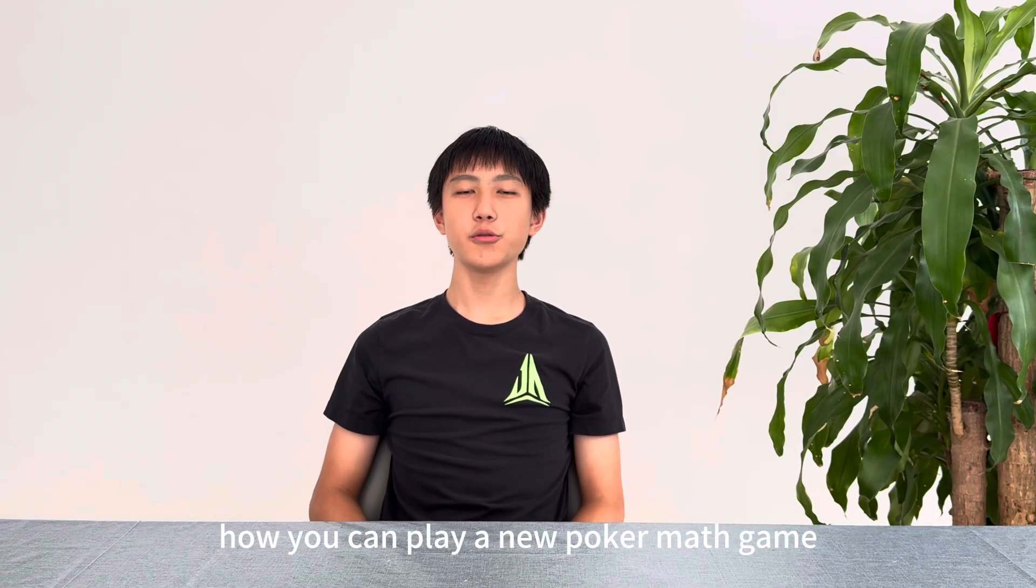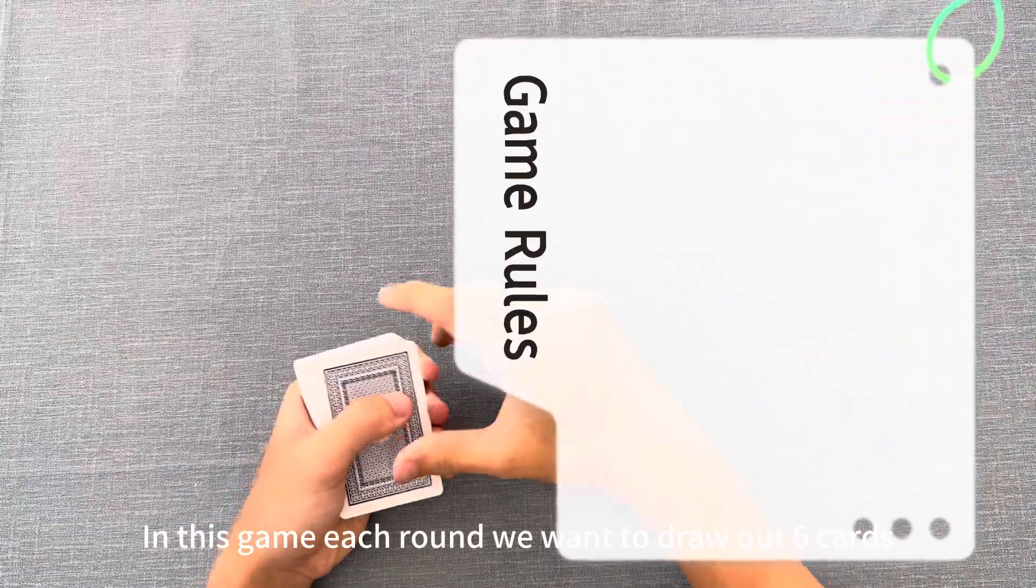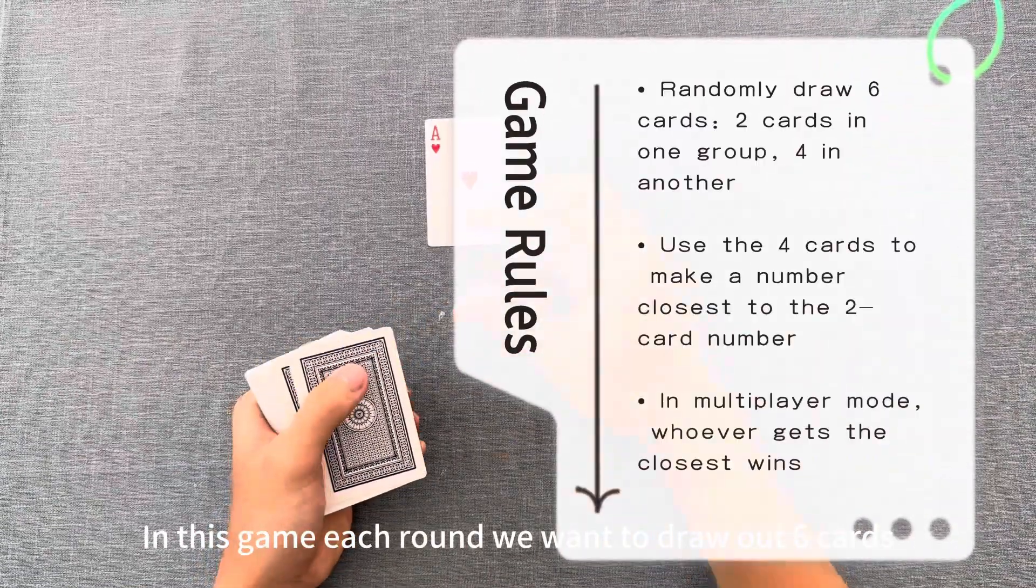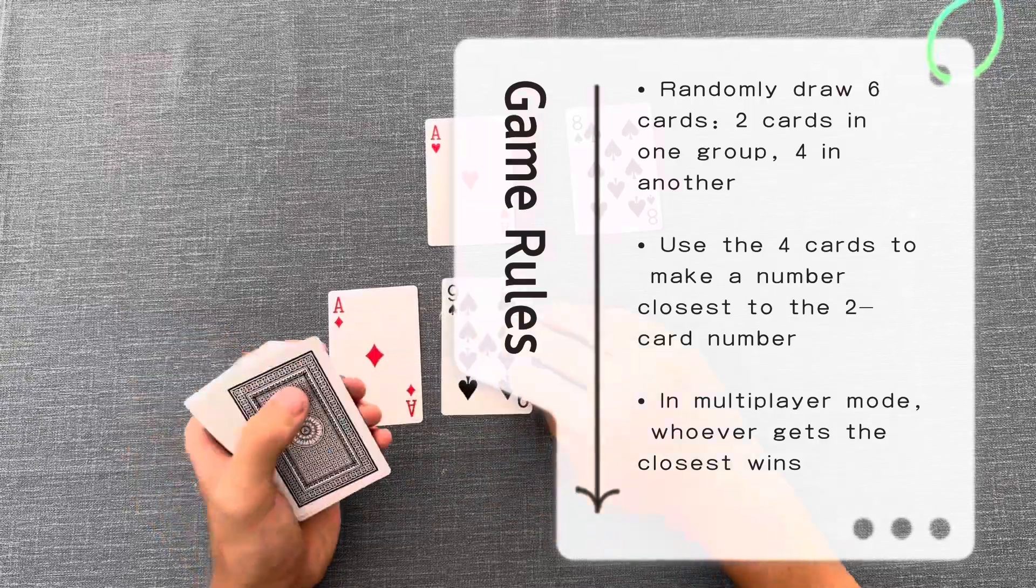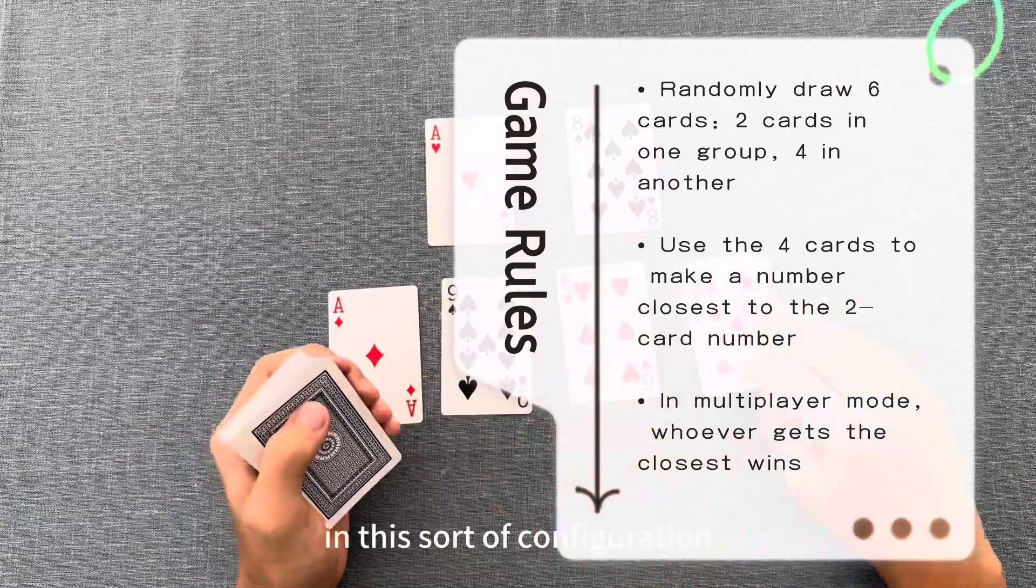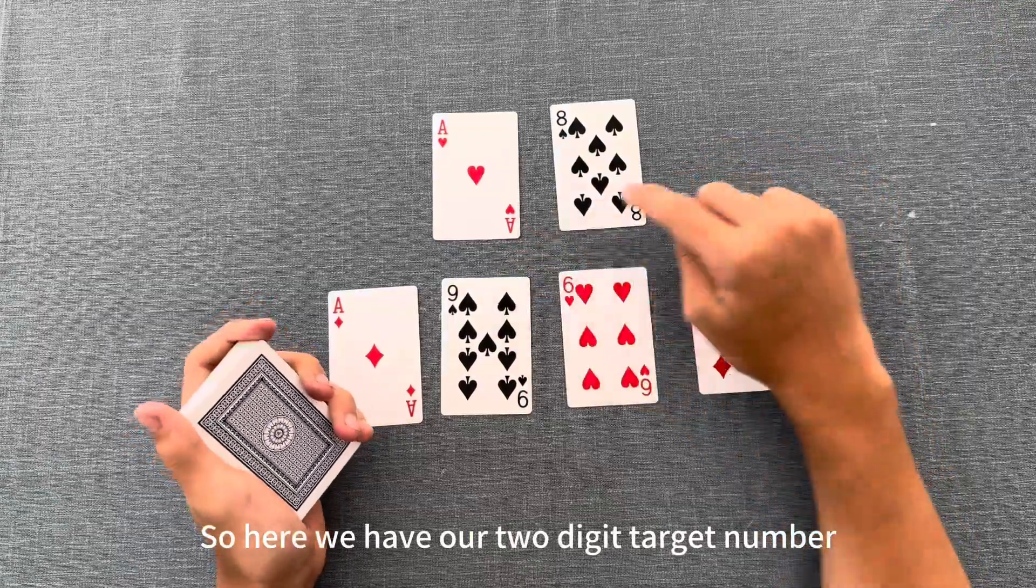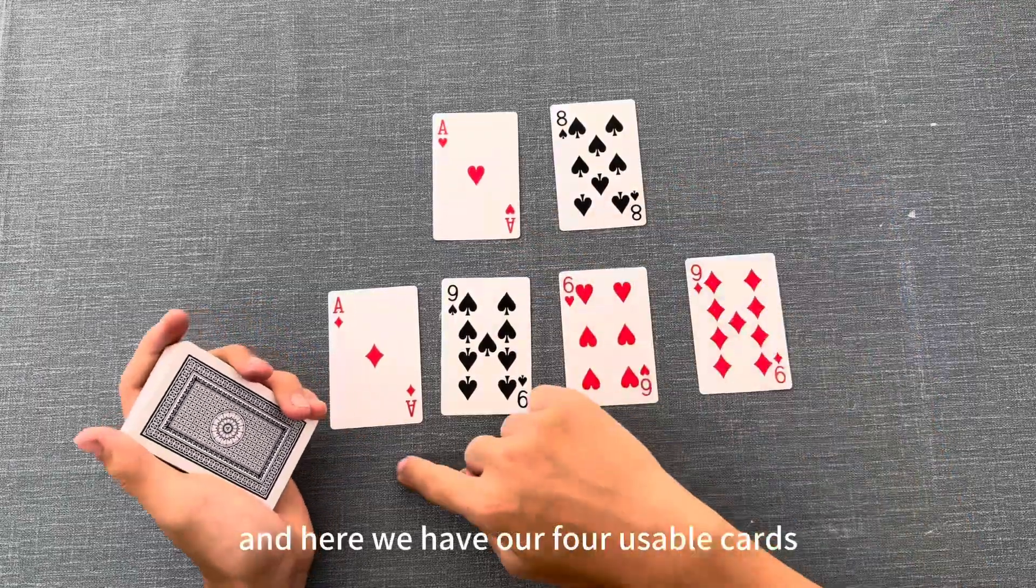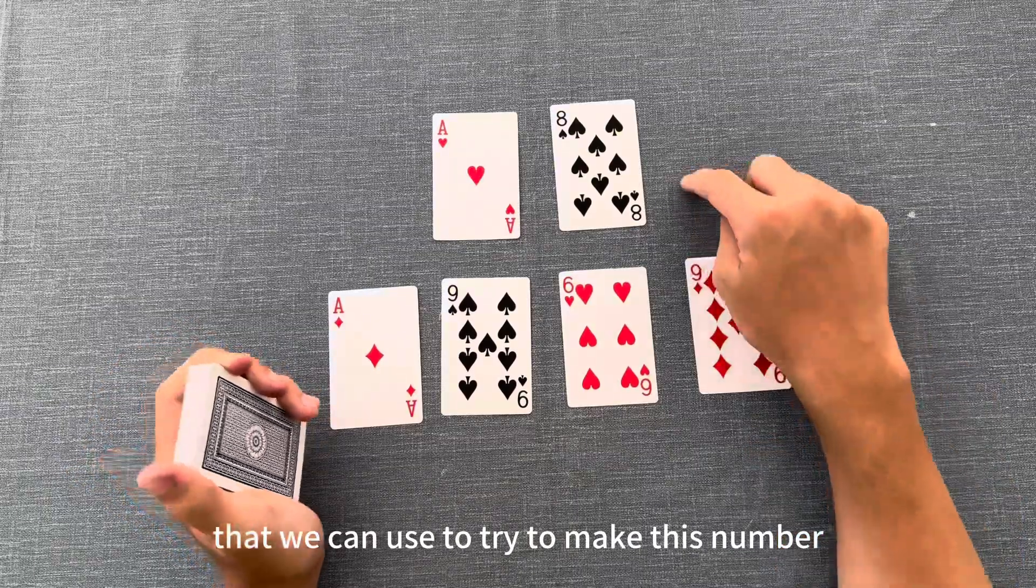Today I'll be explaining how you can play the new PokerMath game called Build the Number. In this game, each round we draw out six cards in this sort of configuration. Here we have our two-digit target number, and here we have our four usable cards that we can use to try to make this number.